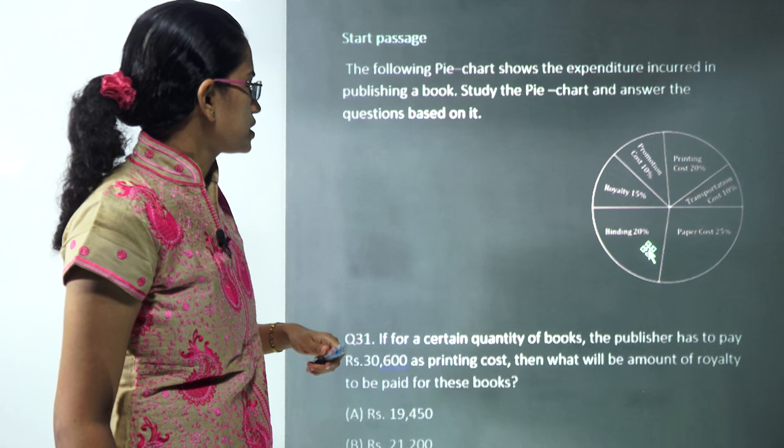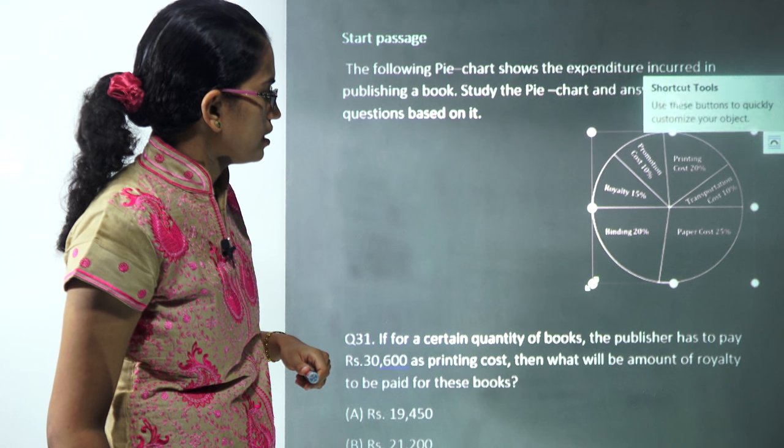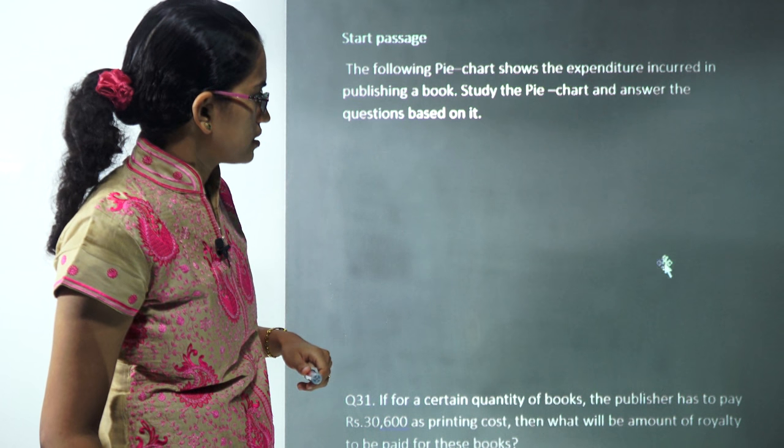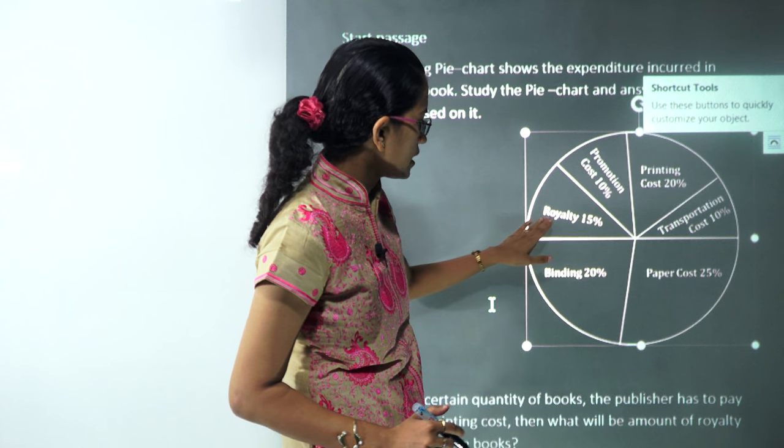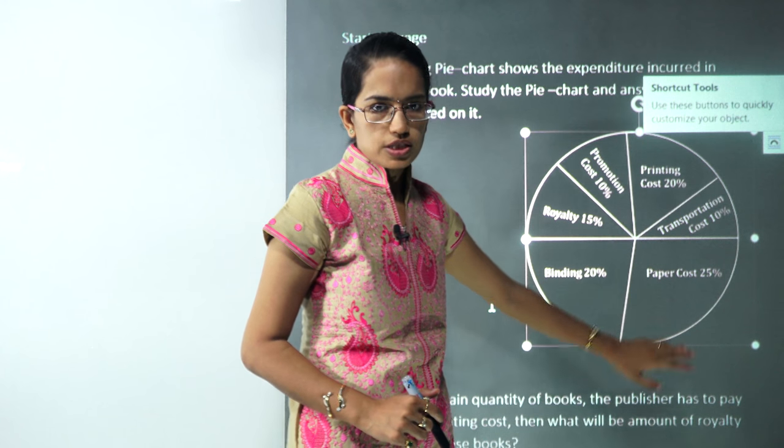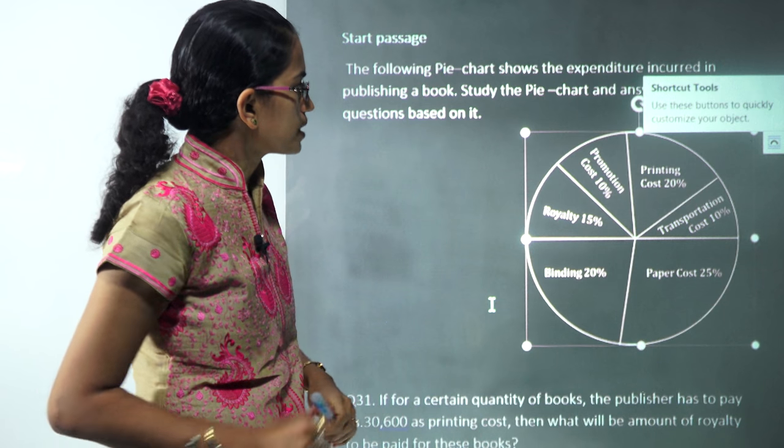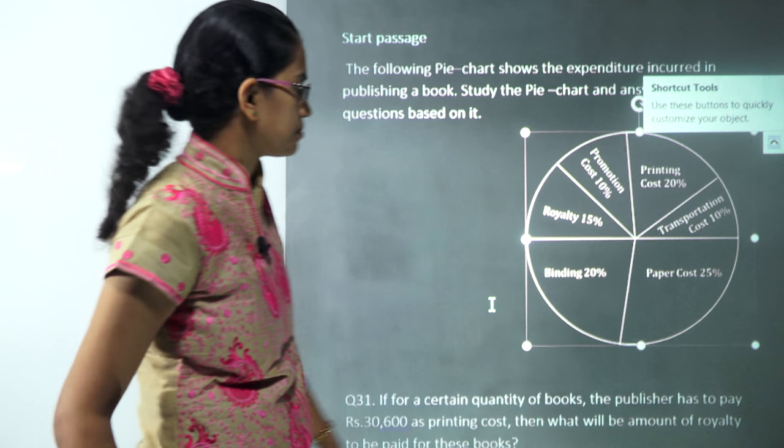The next question, you have various data that's given. You have printing cost is 20%, royalty is 15%, and paper cost is 25%. These three would be the ones we would be using and transport cost as well is 10%.